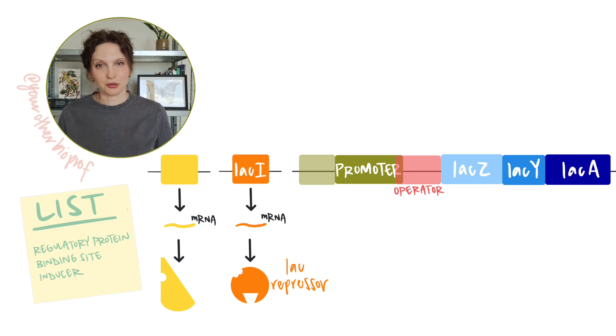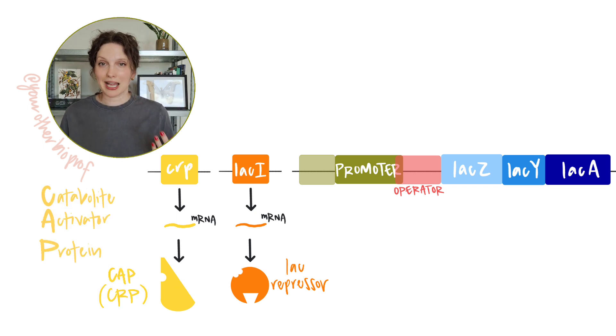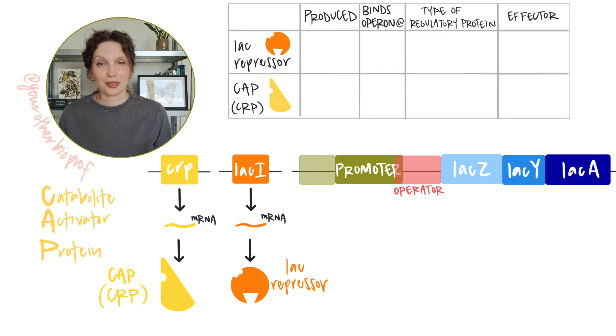Our new regulatory protein is called CAP, catabolite activator protein. But you may also see it referred to as CRP. Now, like the lac repressor protein that you're already familiar with, it's going to bind to a specific location on the lac operon in order to regulate expression. But CAP is different from the lac repressor in three important ways. First, CAP is produced in an inactive state, so it needs to bind an effector molecule in order to become activated.